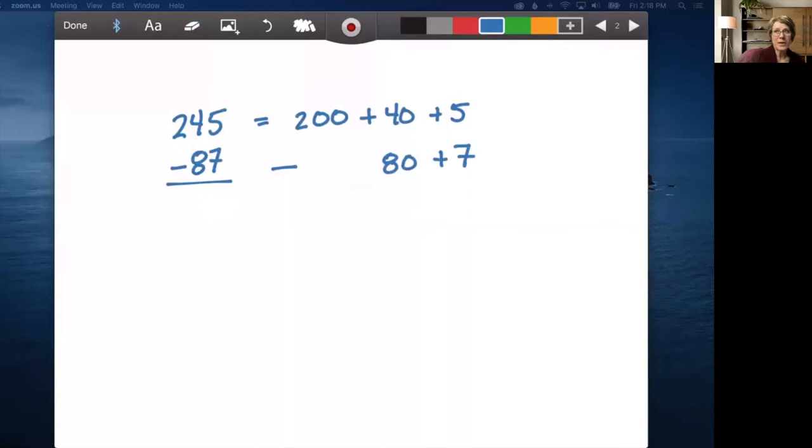Instead of saying borrowing, we're not really taking from something and then giving it back. We are regrouping some of our different place values. For example, I'm going to regroup this 40 into a 30 and a 10. And then this is going to become 30 and this is going to become 15. So I regrouped my tens.